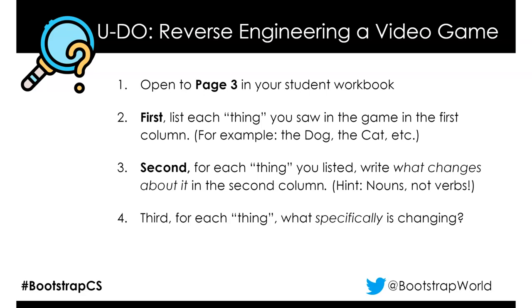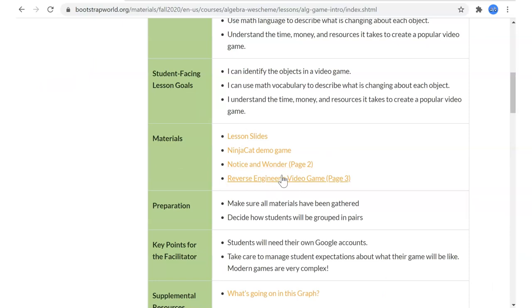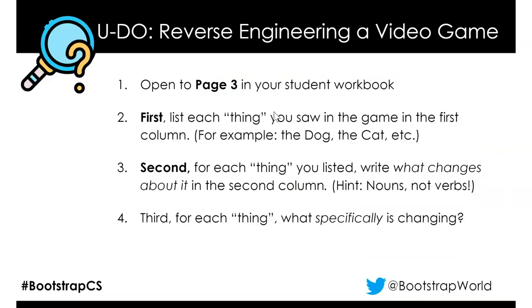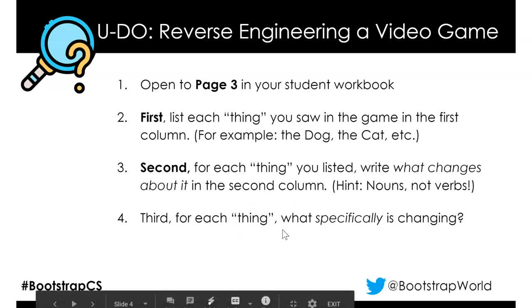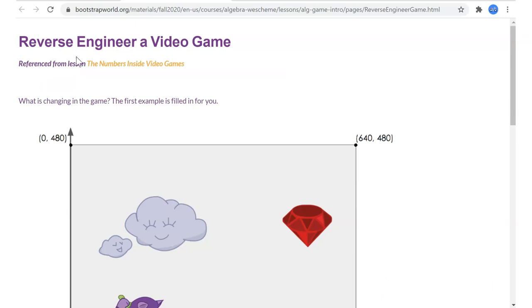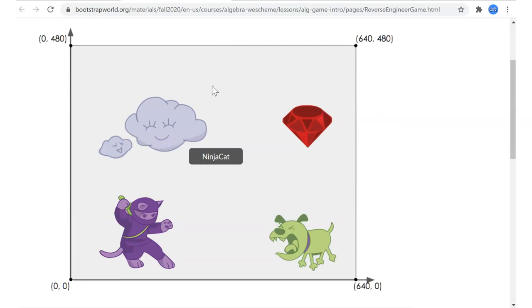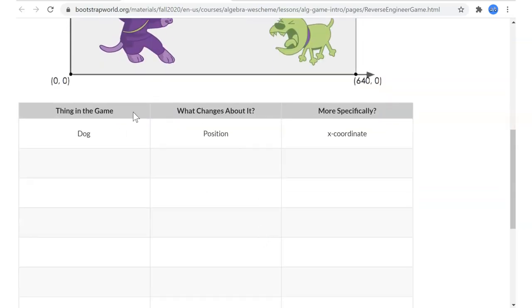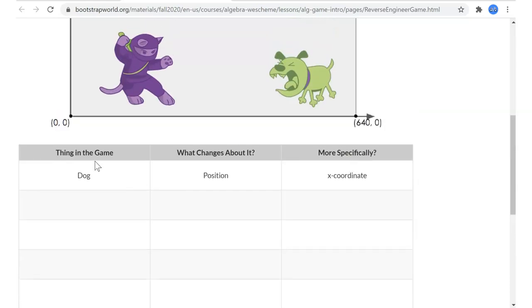So that's the process we're going through now: we observe some things about how it works, then continue to break that down and reverse engineer so that we can make our own version. Let's open page three in our workbook. First, list each thing you saw in the game. Second, for each thing you wrote down, what changes about it? And third, what specifically is changing? In the page, we have a little image to remind us of what's going on in NinjaCat, some of the elements we see, and then a grid we can fill in — and they've already filled in one.